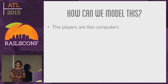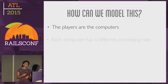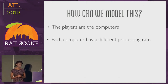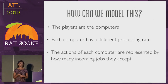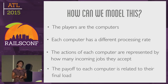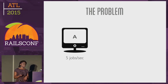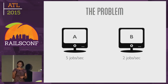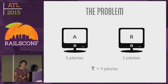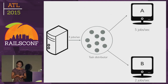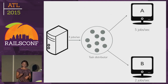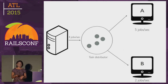So let's tie this to our distributed system where two computers need to work together to complete some tasks. How do we model this? The players are the computers. Each computer has a different processing rate and we know this from the beginning. Each computer's strategy is to accept an agreed number of incoming jobs. The payoff to each computer is related to their final load — we assume that lighter loads are better. Computer A can handle five incoming jobs every second, and computer B can handle two incoming jobs every second. Together they need to complete four jobs.